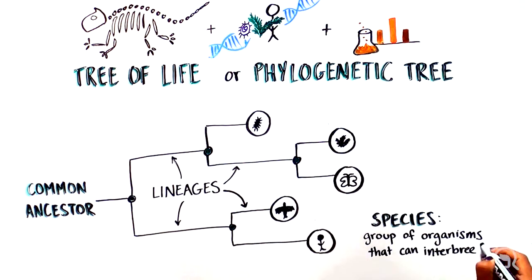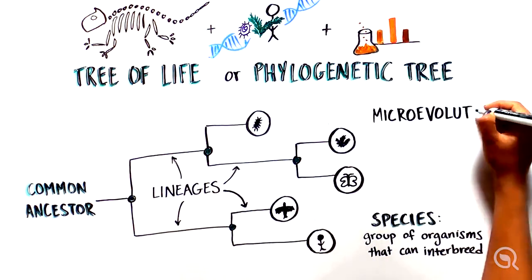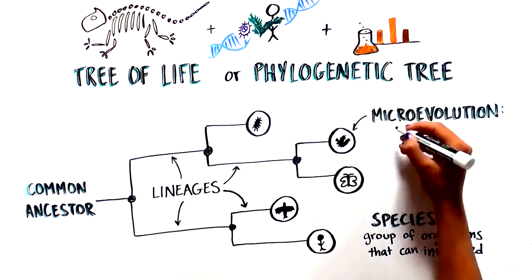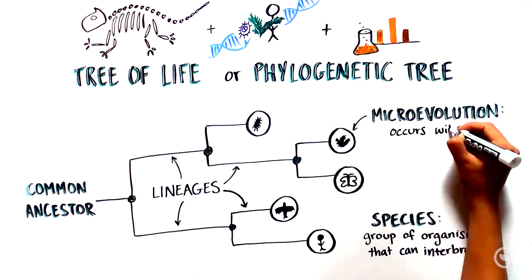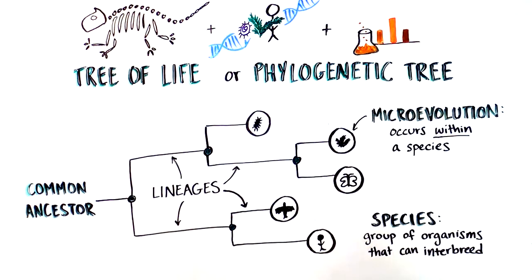A species refers to a group of organisms that can interbreed with each other. Evolution that happens at the population level, meaning within an individual species, is referred to as microevolution. In contrast, macroevolution is used to describe evolution at or above the individual species level.